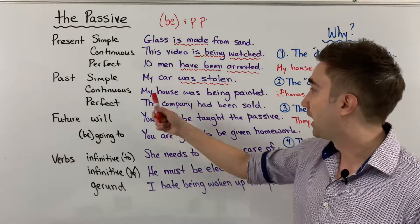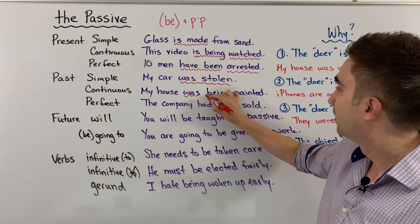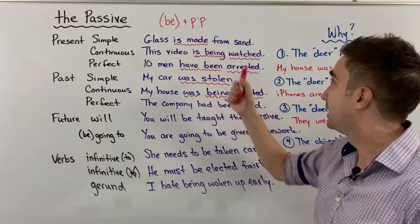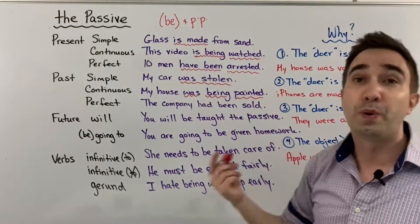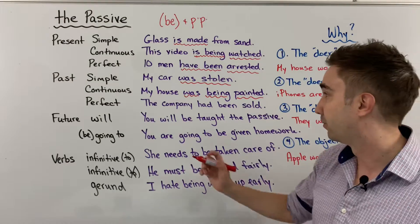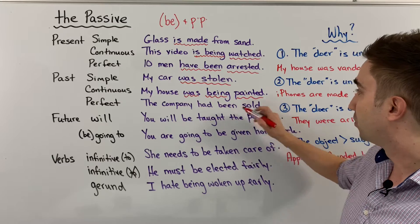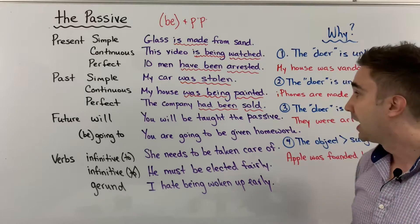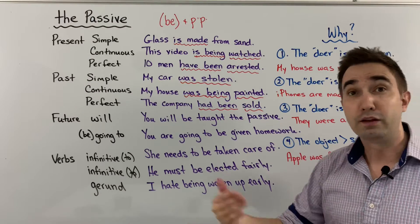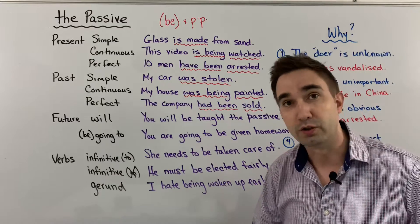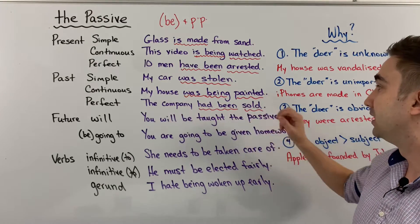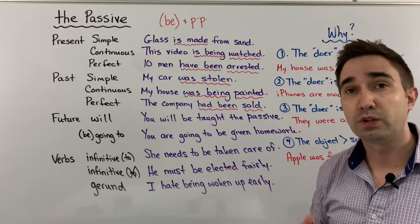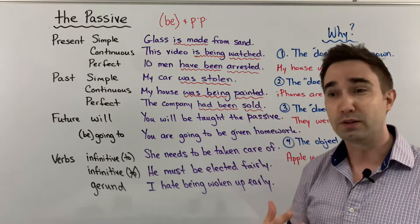For past continuous: last week my house was being painted. 'Was being painted' — 'was being' is our be, and 'painted' is the past participle. Who painted my house? Not sure, not important, I don't know. For past perfect: the company had been sold. 'Had been' is our be, and 'sold' is the past participle. The company had been sold by the owner, by the shareholders, by somebody. You can see here that I don't really care who did the action — I don't know, or I don't care, or it's not necessary.